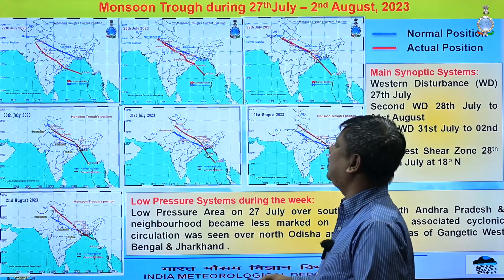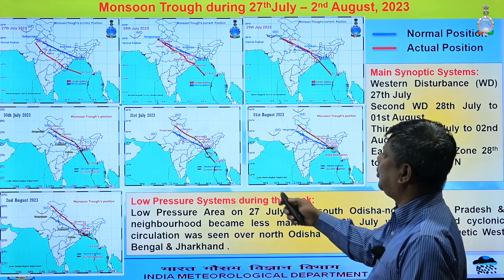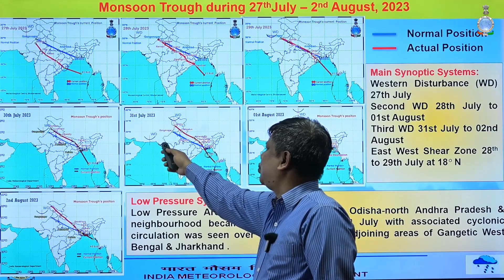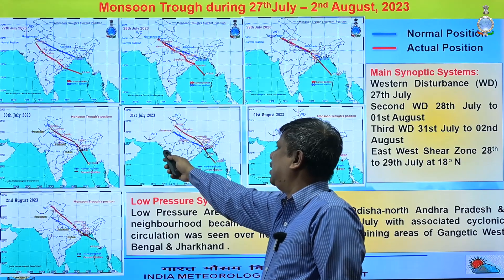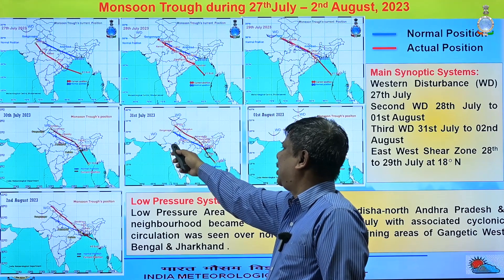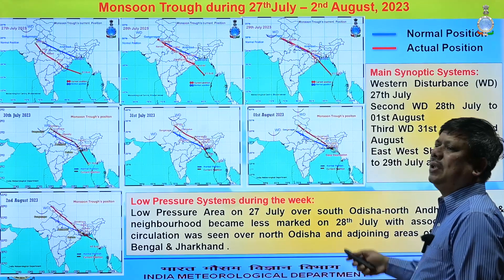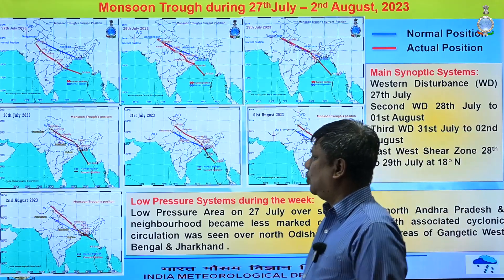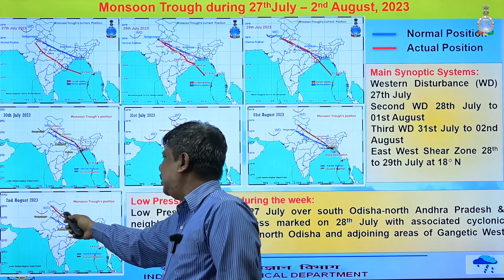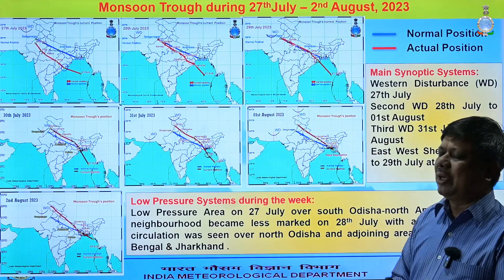Another western disturbance — the third WD — started on 31st July from 62 degrees longitude and 27 degrees north, then also moved eastward. By 2nd August it was over 70 degrees east and 32 degrees north, just over the Pakistan region.